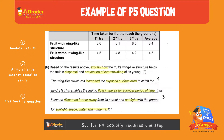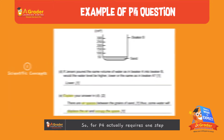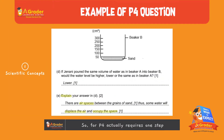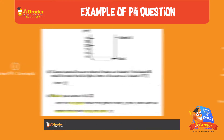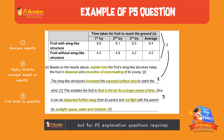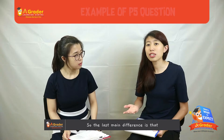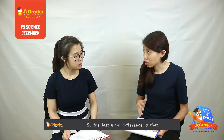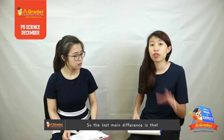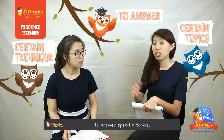So P4 actually requires one step, but P5 explanation questions require three steps to answer. The second main difference is that for P5, they require a certain technique to answer specific topics.